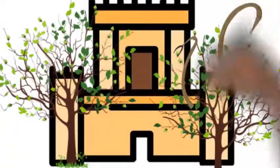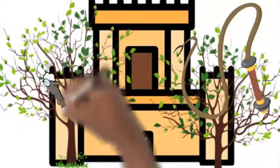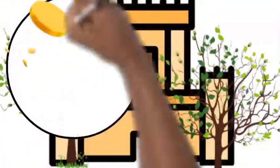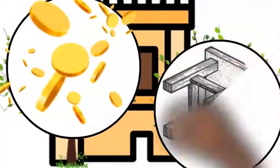So he made a whip out of cords and drove all from the temple courts, both sheep and cattle. He scattered the coins of the money changers and overturned their tables.